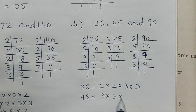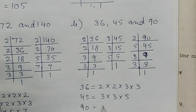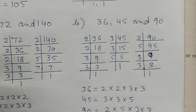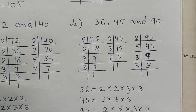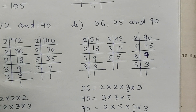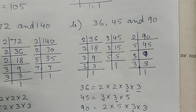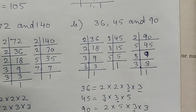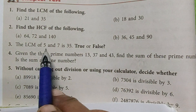45 = 3 × 3 × 5 and 90 = 2 × 5 × 3 × 3. The common factors are 3 and 3, so the HCF is 3 × 3 = 9.